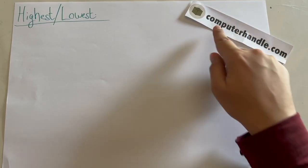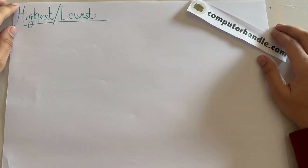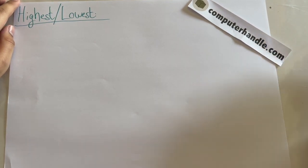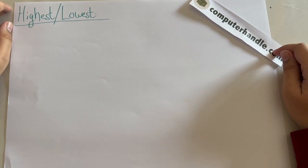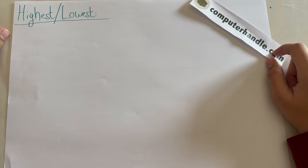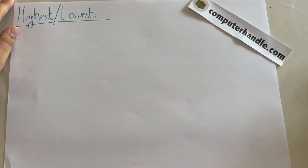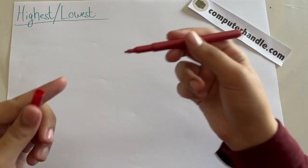Welcome to computerhandle.com. Up till the previous lecture, we've done everything in flowcharts and translated them into pseudocode. This chapter was intended for that. However, there's one extra concept we need to cover before the end-of-chapter revision, and that is the highest and lowest concept — how we denote whether a number is the highest or lowest using pseudocode.